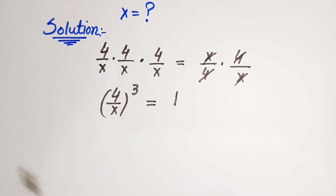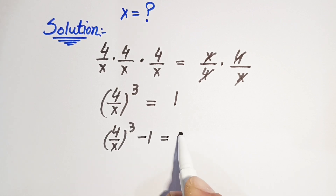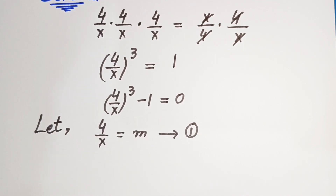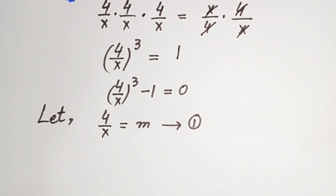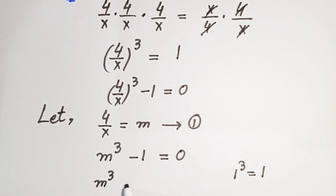Now we shift terms so that 4 divided by x, whole cubed, minus 1 equals 0. Let us suppose 4 over x equals m — that is equation 1. Substituting this value, we get m cubed minus 1 equals 0, and since 1 equals 1 cubed, we write m cubed minus 1 cubed equals 0.